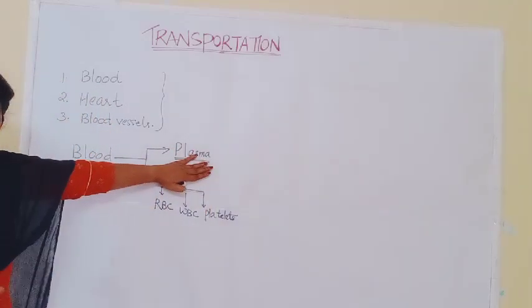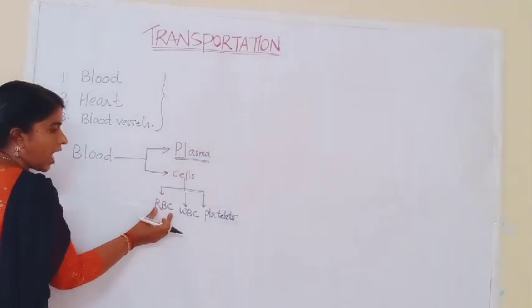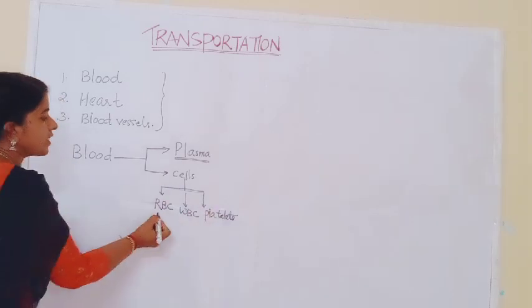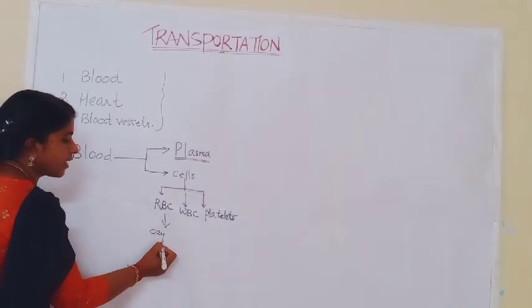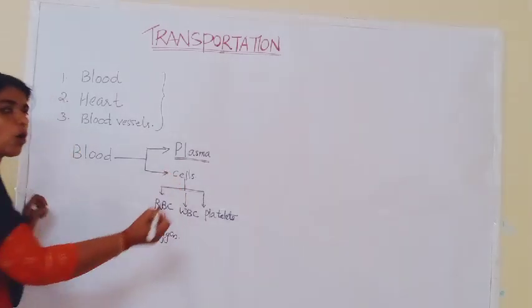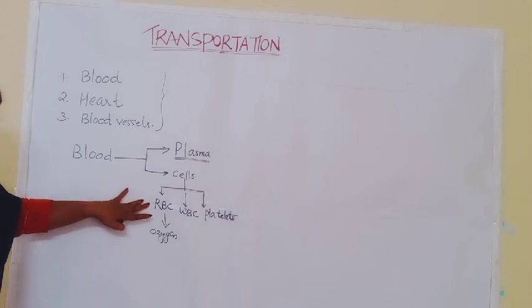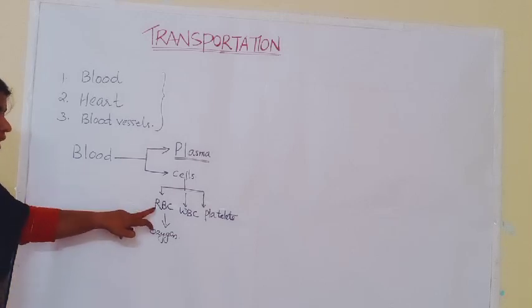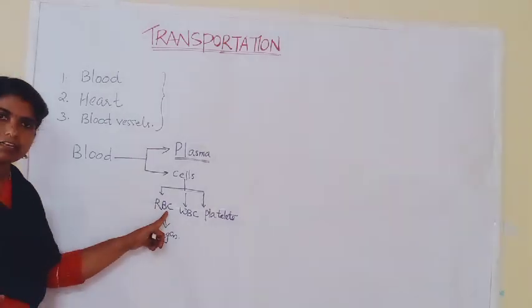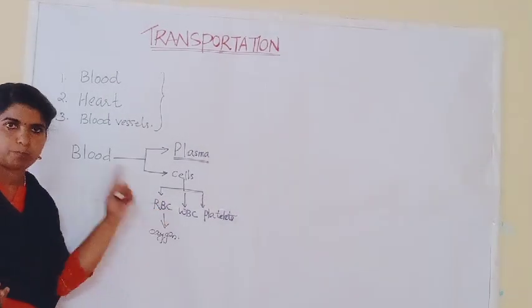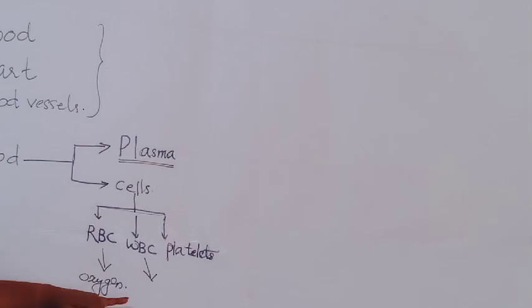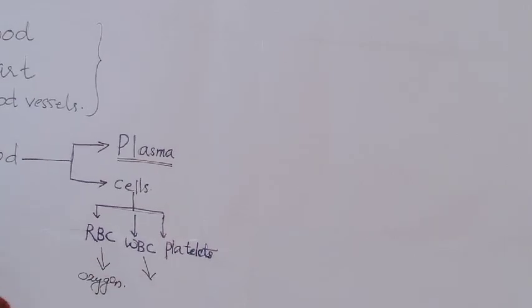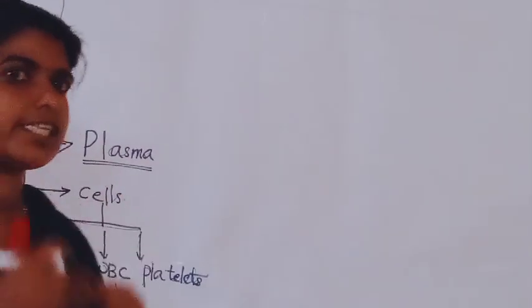What is the role of RBC? It helps to transport oxygen because the respiratory pigment hemoglobin is present in the RBC — it is red in color, that is red blood corpuscles. Now WBC — white blood corpuscles — help to fight against infectious agents. These are like soldiers in the blood.